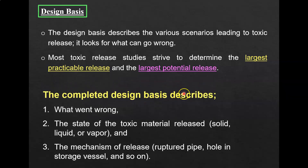The complete design basis describes what went wrong with a particular plant or equipment, the state of the toxic material release — whether solid, liquid, or vapor — and the mechanism of release: how that toxic gas is released, whether by a ruptured pipe, a hole in a storage vessel, and so on, including the diameter of that hole or rupture.